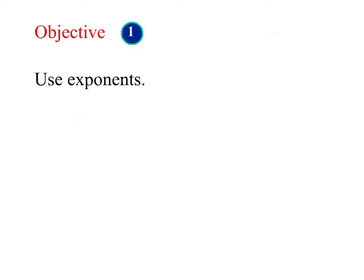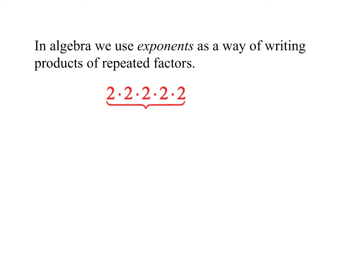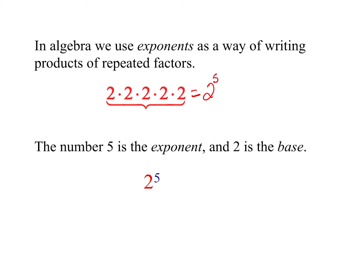Starting with exponents, our first objective: exponents are a way to write repeated factors or repeated multiplication. So if we look at this, we have the number two multiplied five times, so we could rewrite that as two to the fifth power. The five is the exponent, the little number on top. The two is the base — the big number is what we consider the base.